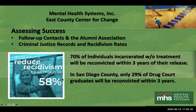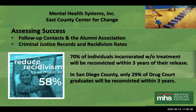East County Center for Change assesses its success in a couple of ways. One is through follow-up contacts — there's always permission given to follow up after clients leave, and there's also a pretty strong alumni association. The other way success is assessed is through criminal justice records and recidivism rates. Since all clients are justice-involved, any follow-up arrest after they leave is public record and available for assessment.